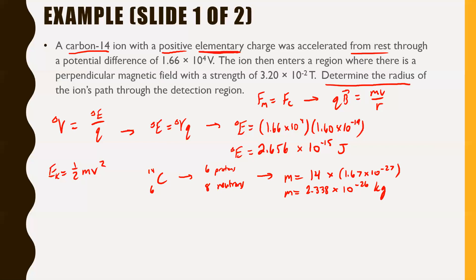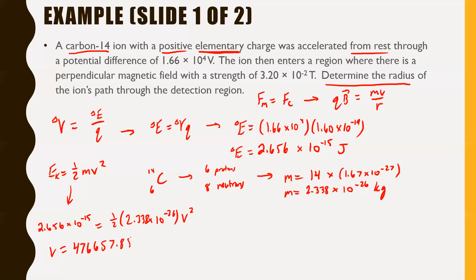Taking a step back: I started with the end in mind — I want to find the radius. To find the radius using QB equals MV over R, we only knew Q and B. So we needed to find M and V. We've found M. Now we find V from EK: 2.656 × 10⁻¹⁵ equals ½ times 2.338 × 10⁻²⁶ times V². Solving this — divide by one half, divide by the mass, and take the square root — gives V equals approximately 476,657.883 meters per second.